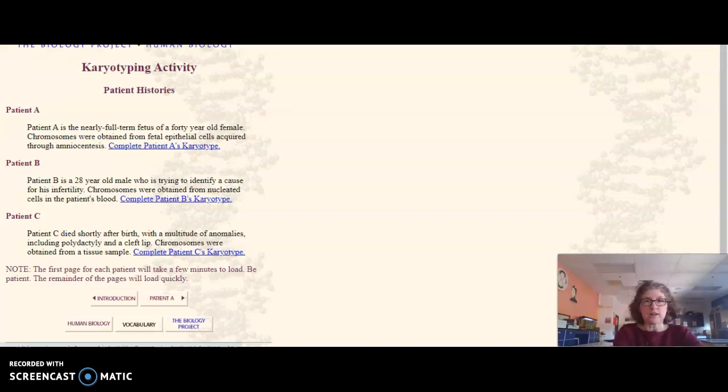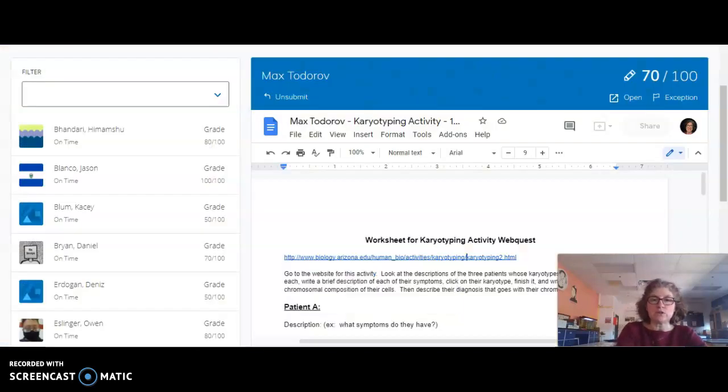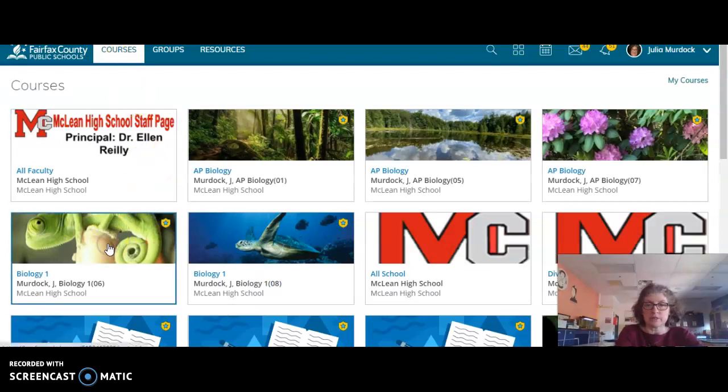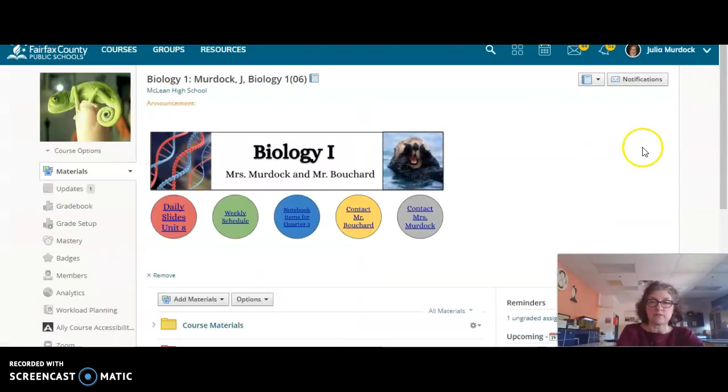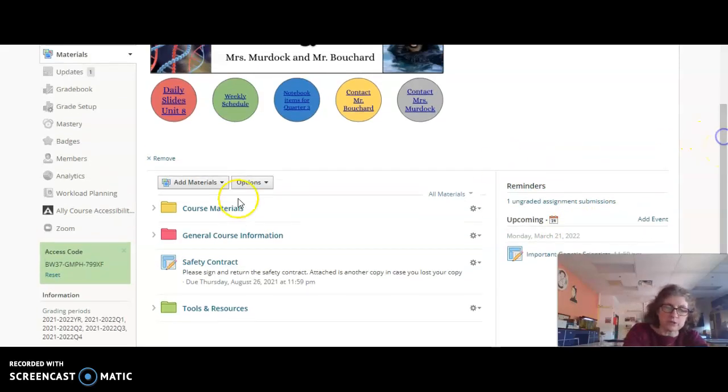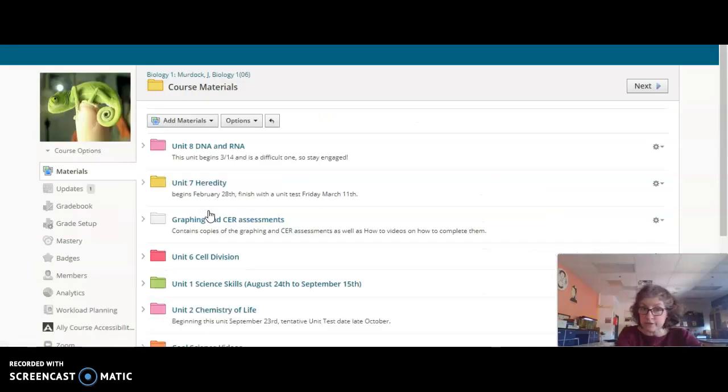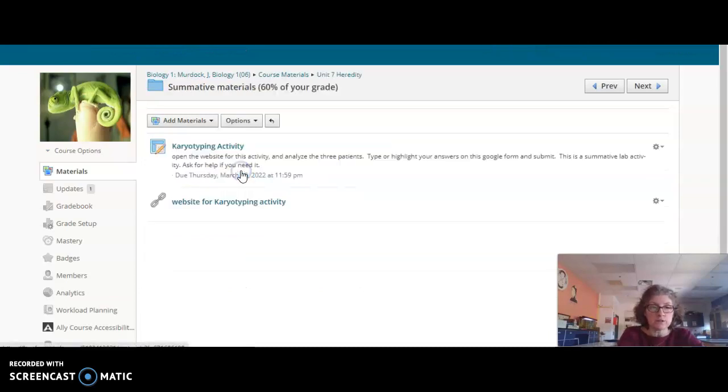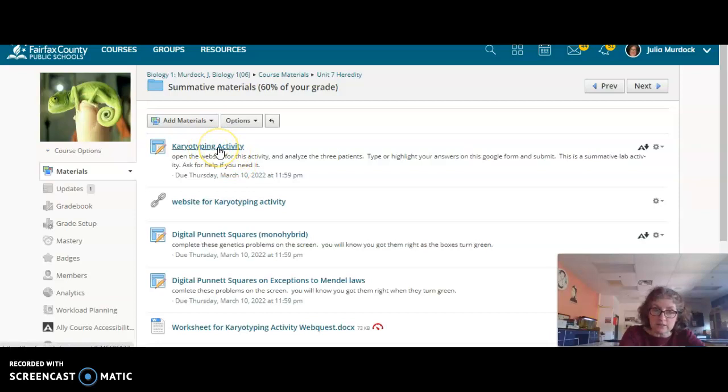I wanted to show you that and also make sure you know where to go to find this assignment. If you go to our course, if you're in period 6, let's open period 6. If you go over here to the right, I think that might already be gone because it was already due. But you look up course materials, and that was a heredity assignment in summative materials. If you look in there, there's the karyotyping activity.